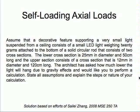The lower cross-section is 25 millimeters in diameter and 50 centimeters long, and the upper section consists of a cross-section that's 12 millimeters in diameter and 120 centimeters long. The architect has asked how much lower the light will hang due to gravity effects, and would like you to perform a calculation, state all the assumptions, and explain the steps or nature of your calculation.